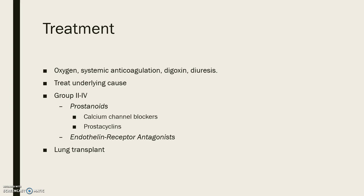Pharmacologic therapy is started for symptomatic patients in Groups 2 through 4. Prostacyclins inhibit smooth muscle proliferation and platelet aggregation; these can be delivered by inhalation, IV, or sub-Q. Calcium channel blockers are only FDA-approved for idiopathic pulmonary hypertension, which is rare.